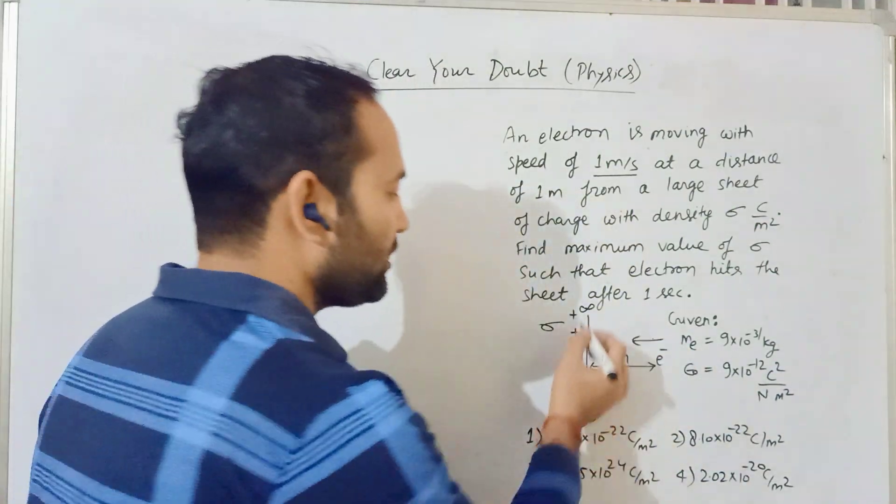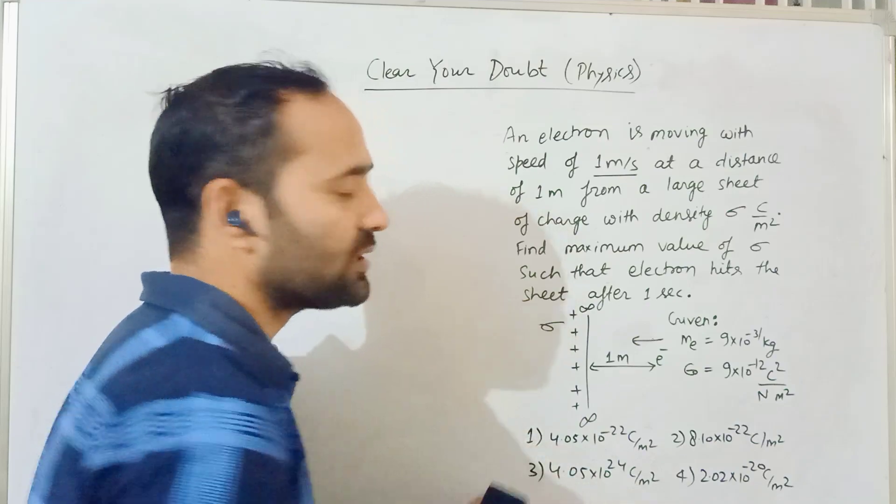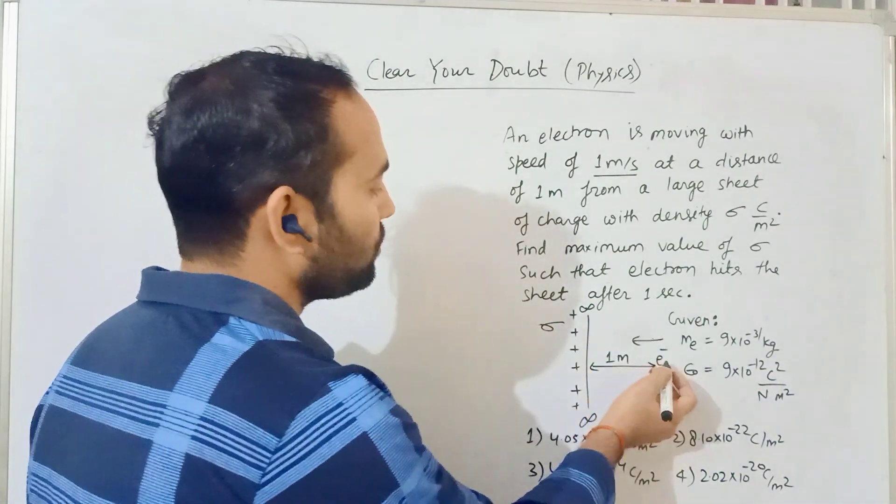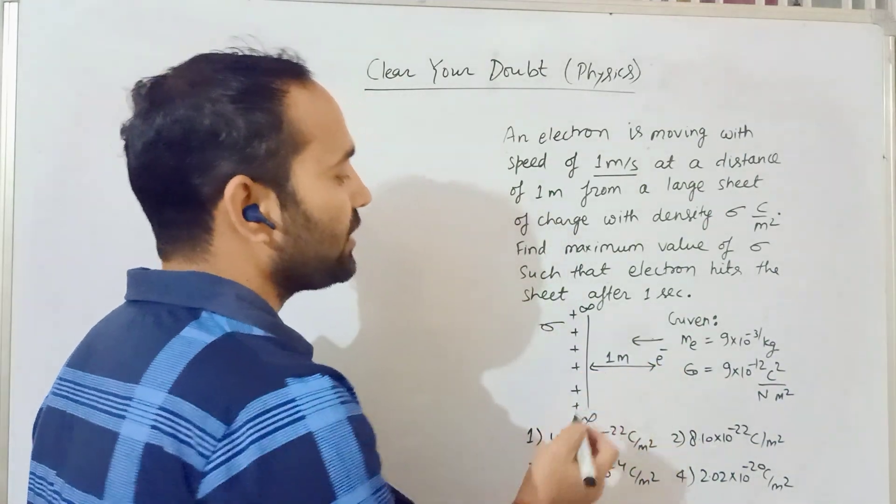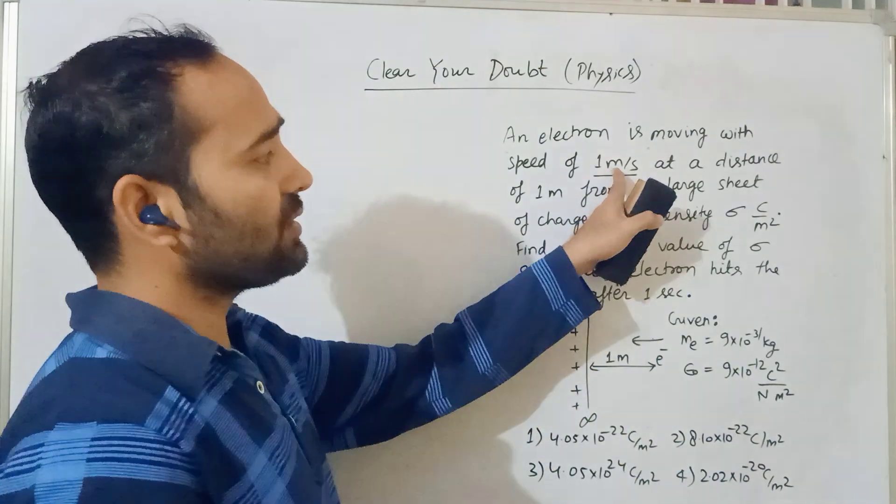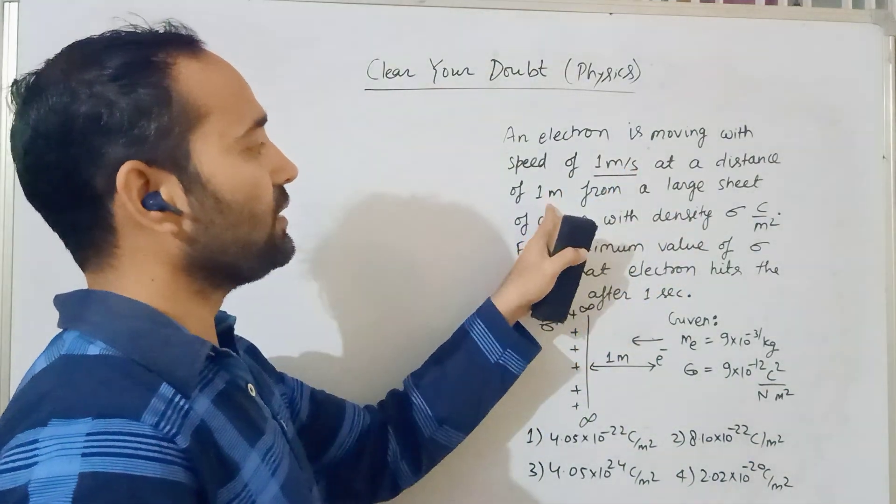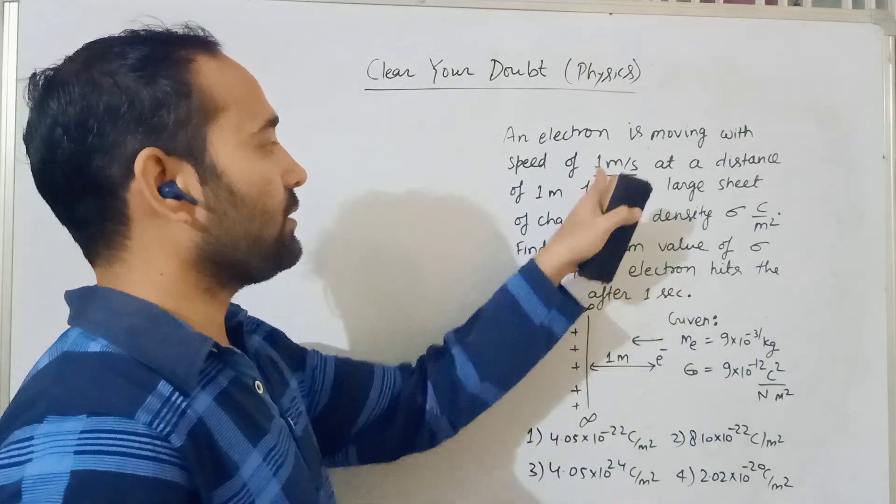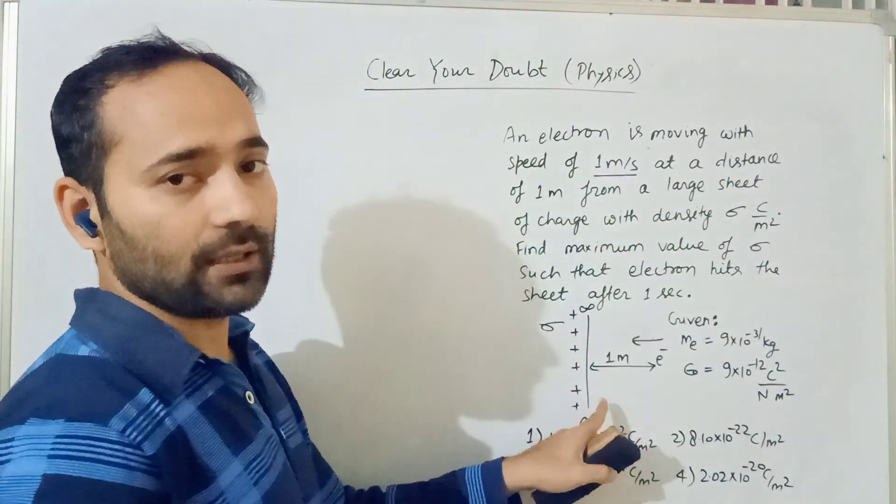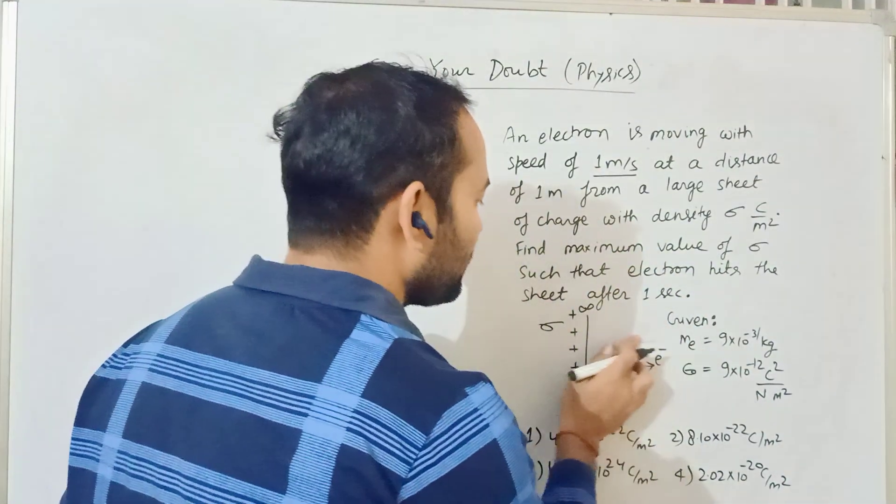If there is a force, the attraction has to be possible. If sigma is zero, then the electron will hit in 1 second at 1 meter per second - because its speed is 1 meter per second. So this direction is not possible.